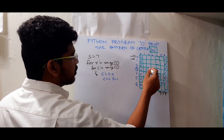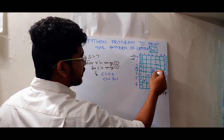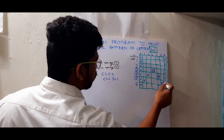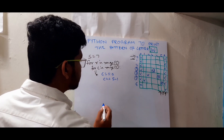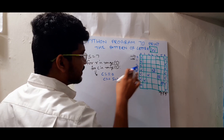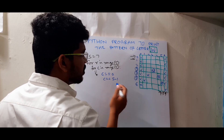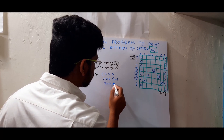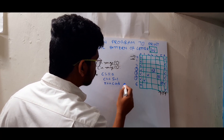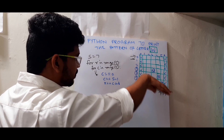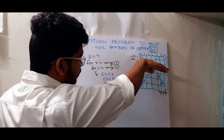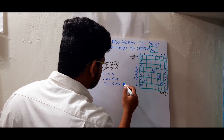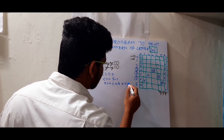The row is 3 and the column is also 3. The row is 4 and the column is 4. The row is 5 and the column is 5. So the condition is row == column, and it should also be greater than half — the row should be greater than half, so that it prints the lower half.